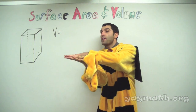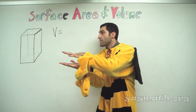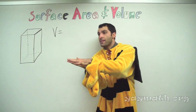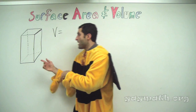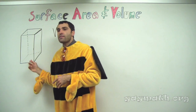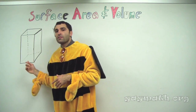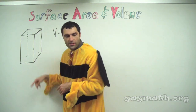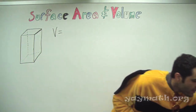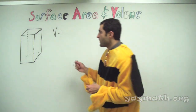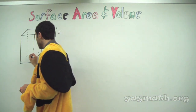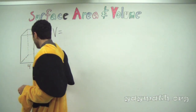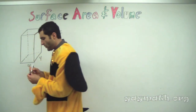Remember, the definition of a prism is that you create any face you want — any base. In this shape, what's our base? The bottom rectangle. So let's call it a square — we'll do four and four, for example.